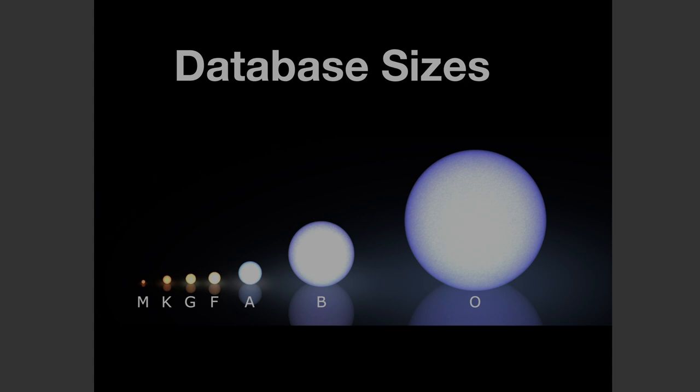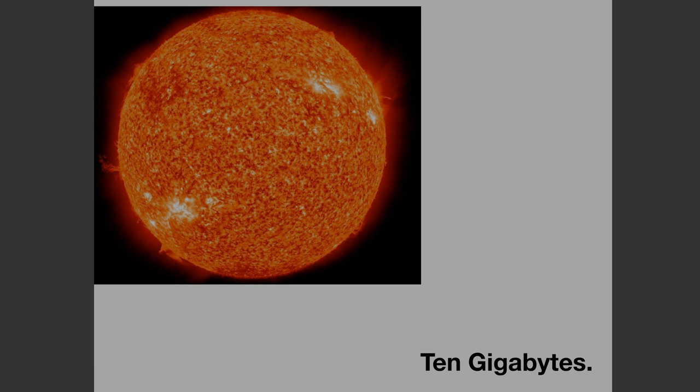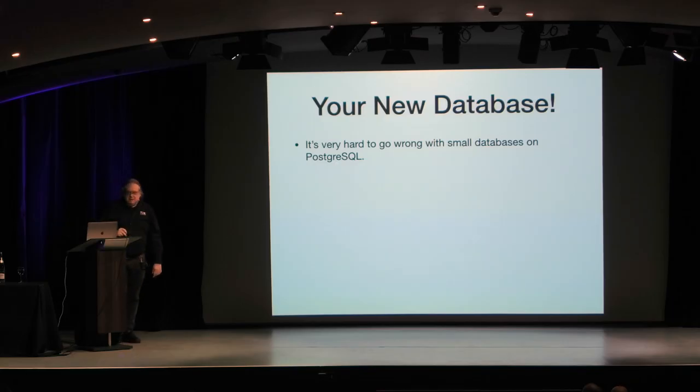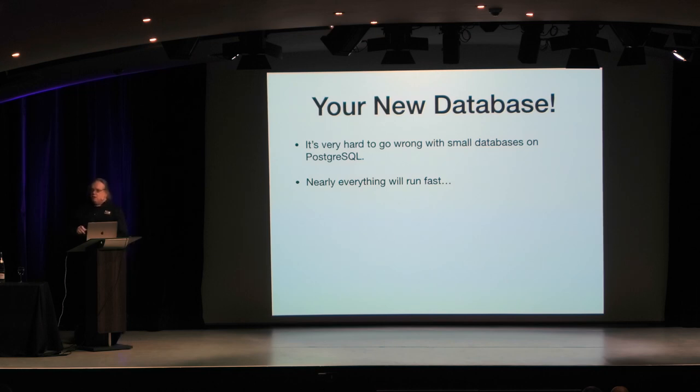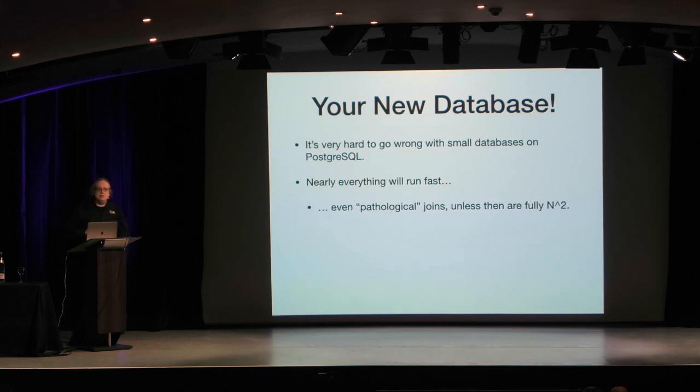We're going to use main sequence stars as a metaphor here. Your basic database is a 10-gigabyte database - sort of everybody's first database. The nice part about PostgreSQL is it's very hard to go wrong with a 10-gigabyte database. Nearly everything will run fast. Even pathological joins, even a cross-join, unless it's a fully n-squared join across a couple of large tables, will perform very well. This is both a blessing and a curse, because when you start out everything seems to run fast, and as the database gets larger, at some point you're surprised when things no longer work well.